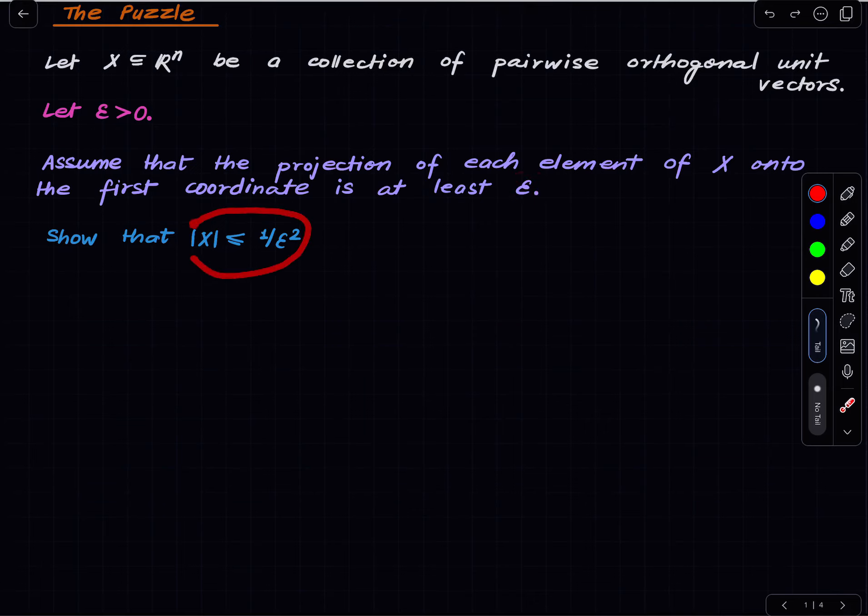We want to show that X cannot be too big. Okay so first we already know that X cannot be more than n because it is a collection of pairwise orthogonal unit vectors and hence in particular linearly independent.